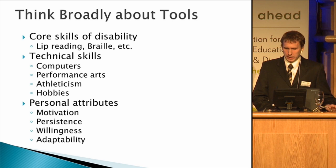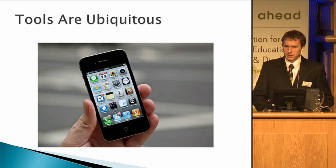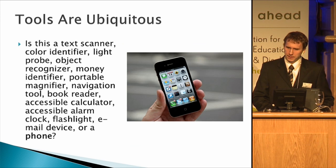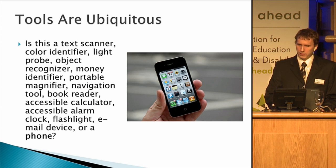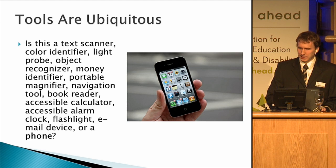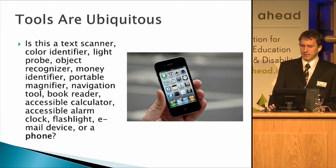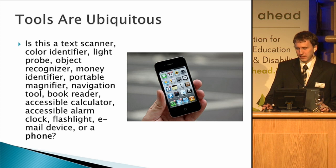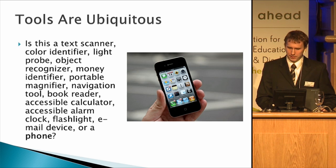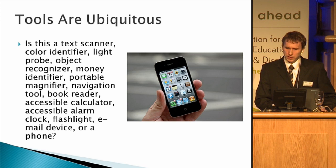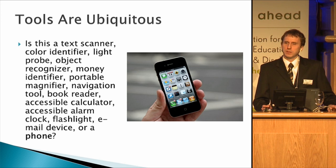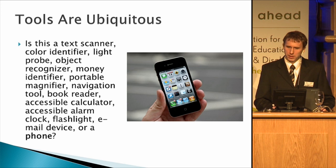Tools are ubiquitous. This is a picture of my iPhone. Let's take a quiz. Is this a text scanner? I can point this at a page of text and have it read out loud. A color identifier? It can tell me what color my pants are in the morning. A light probe? I can point it at a blinking light on a machine to know if I have messages. An object recognizer — there's software I've trained to tell me if I'm drinking decaf or regular coffee. A money identifier — it told me I had a five euro note yesterday at a cafe. A portable magnifier for those with some usable vision. A navigation tool to help a blind person find what street they're on. A book reader, an accessible calculator, an accessible alarm clock, a flashlight — or even I hear it works as a phone.